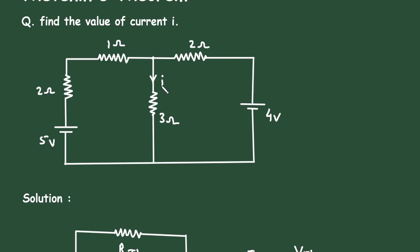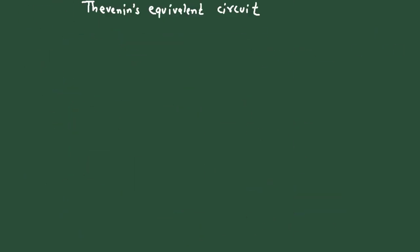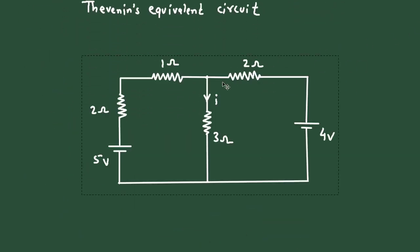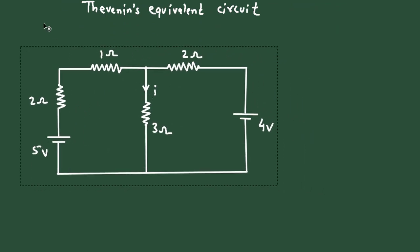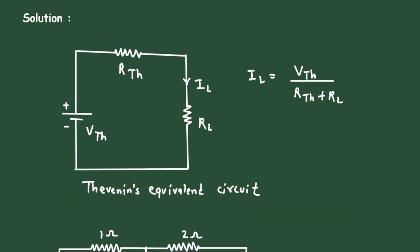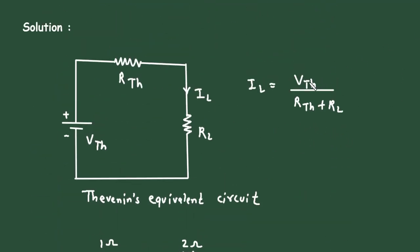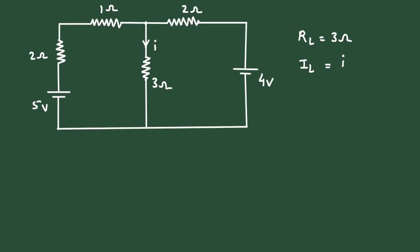Here we can see the value of RL is 3 Ohm, and the value of IL is current i — small current i. Now we need to find the value of Vth and Rth. So let's find the value of Rth.